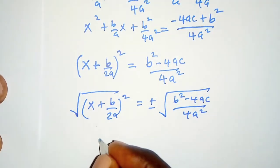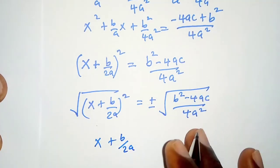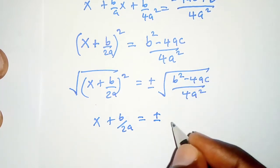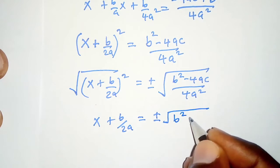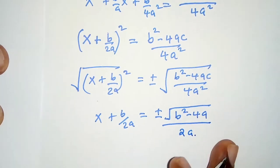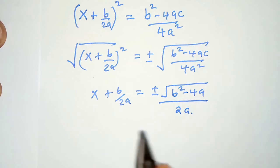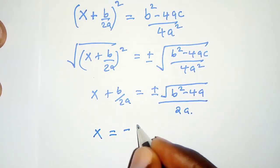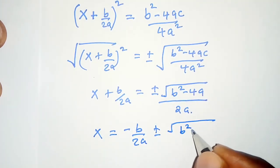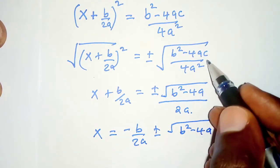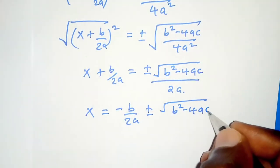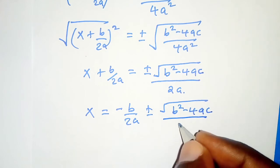The left hand side gives x plus b over 2a, and the right hand side gives plus or minus the square root of b squared minus 4ac in the numerator. The denominator is the square root of 4a squared, which is 2a. Bringing b over 2a to the right hand side, we have x equals negative b over 2a plus or minus the square root of b squared minus 4ac all over 2a.